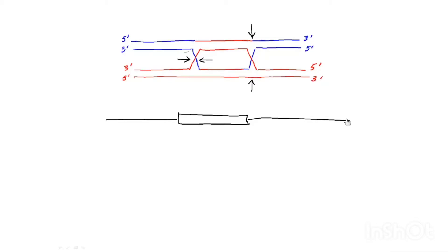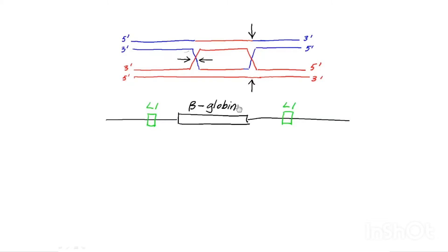So this beta globin gene is surrounded by repeated sequences, and I'll draw for you a repeated sequence. In fact, there are sequences called LINE elements that actually could flank the beta globin gene. So let me call this LINE element L1. And again, this is the beta globin gene. I'm going to describe to you how unequal crossover can generate a duplication of the beta globin gene.